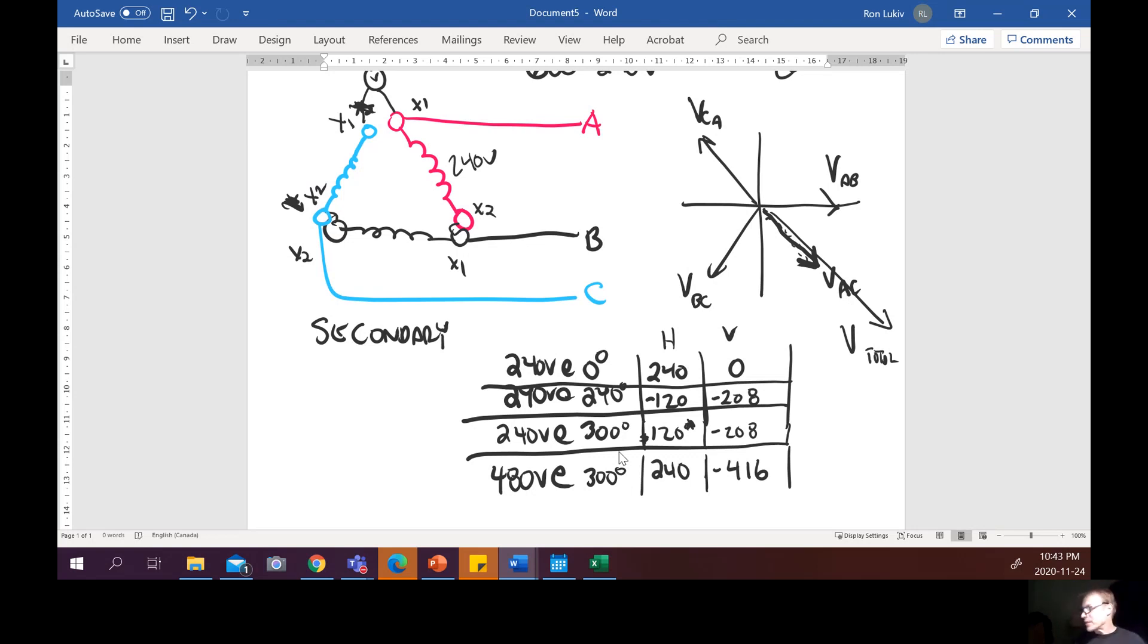So basically what happens is if you reverse one of these windings you're going to get double the voltage. If it's all good then you're going to get zero volts and then that means that you can connect it. Right now with the one winding out if I was to put a jumper from x1 here to x1 there that would be a pretty good short because that'd be 480 volt potential difference between them so I hope that helps. See you in class.